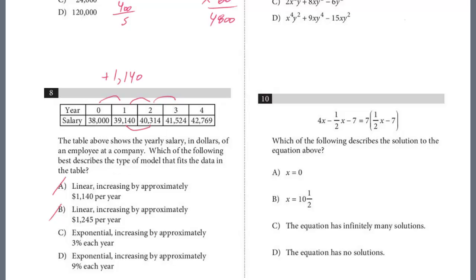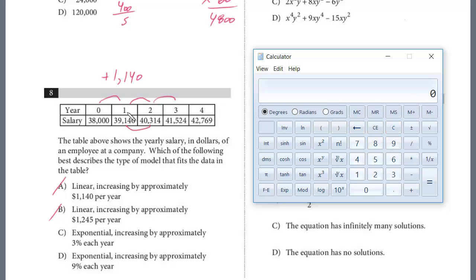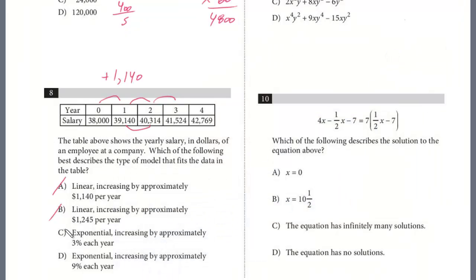We figure out the difference here. I'm just going to use the calculator so I don't make a mistake. So it's 43,314 minus 39,140. This is the difference between years 1 and 2. Now we're going to divide it by the starting amount in year 1, 39,140. We're looking for 3%, and it's almost exactly 3%. So that is the answer. It is exponential and 3%, C.